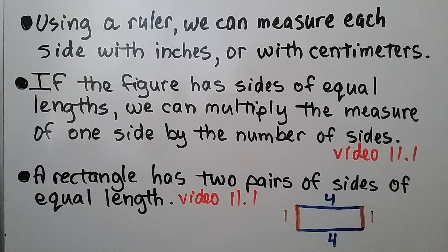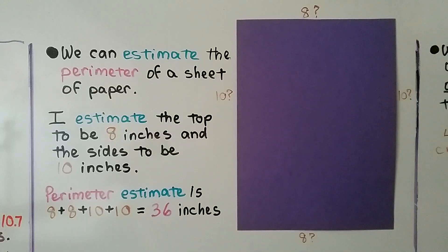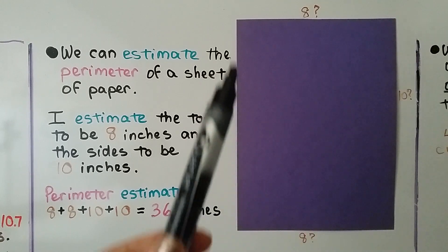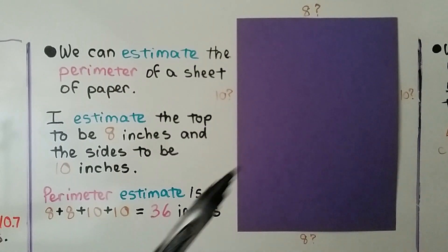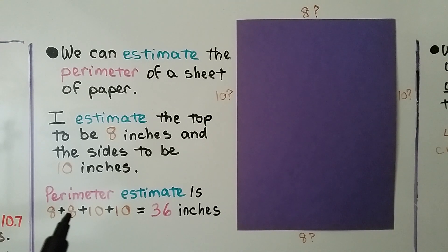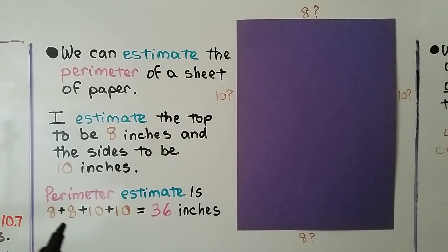A rectangle has two pairs of sides of equal length — these two are the same length, and these two are the same length. Here I have a sheet of construction paper, and we can estimate its perimeter measured around the outside. I estimate the top to be 8 inches and the sides to be 10 inches, so my perimeter estimate is 8 plus 8 plus 10 plus 10. That gives us 20 plus 16, which equals 36 inches.